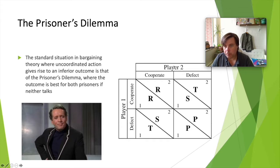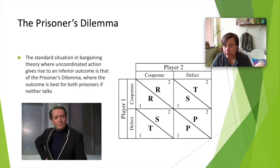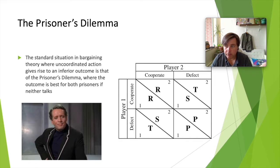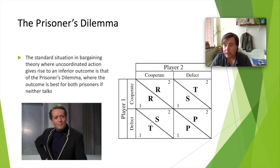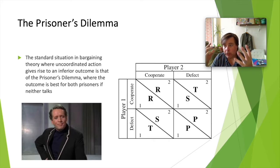Here's the prisoner's dilemma story: two people have potentially committed a crime and the police have brought them in for questioning, placing each in a different room so they can't talk to each other. They'll be asked whether they committed a crime and each has two options: say no, they didn't commit the crime, or implicate both of them. If one prisoner talks and the other doesn't, the prisoner who didn't talk gets a more severe sentence — a longer jail term.